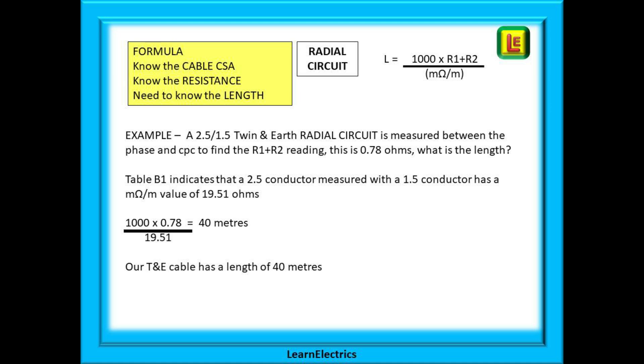Again, table B1 is used to find that the cable is 19.51 milliohms per meter. The length then is 1000 multiplied by 0.78 and divided by 19.51, and our answer should be 40 meters of cable.